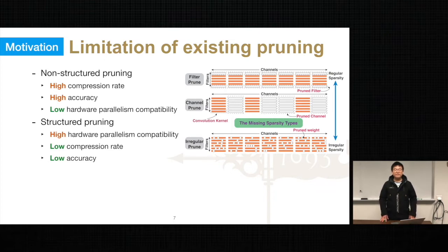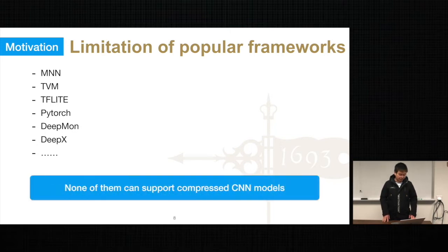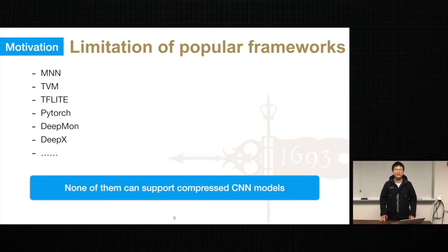Non-structured pruning can achieve a very high model compression rate and good accuracy. However, because it prunes weights at arbitrary locations, it incurs heavy control flow instructions during model execution. Popular frameworks in both industry and academia, like TVM, TF Lite, and Alibaba MNN, do not support sparse DNN execution. Some other efforts explore model compression to accelerate DNN execution; however, they either require new hardware support or do not support the target mobile platform, so we will not discuss them here.